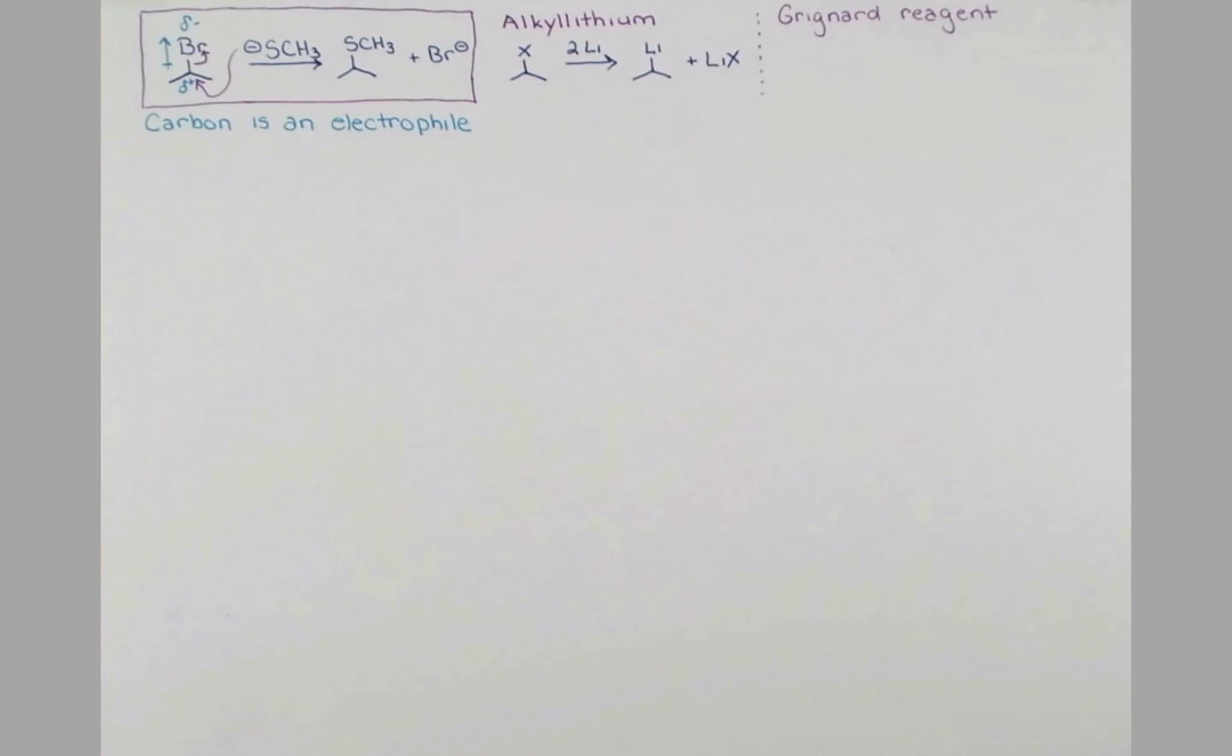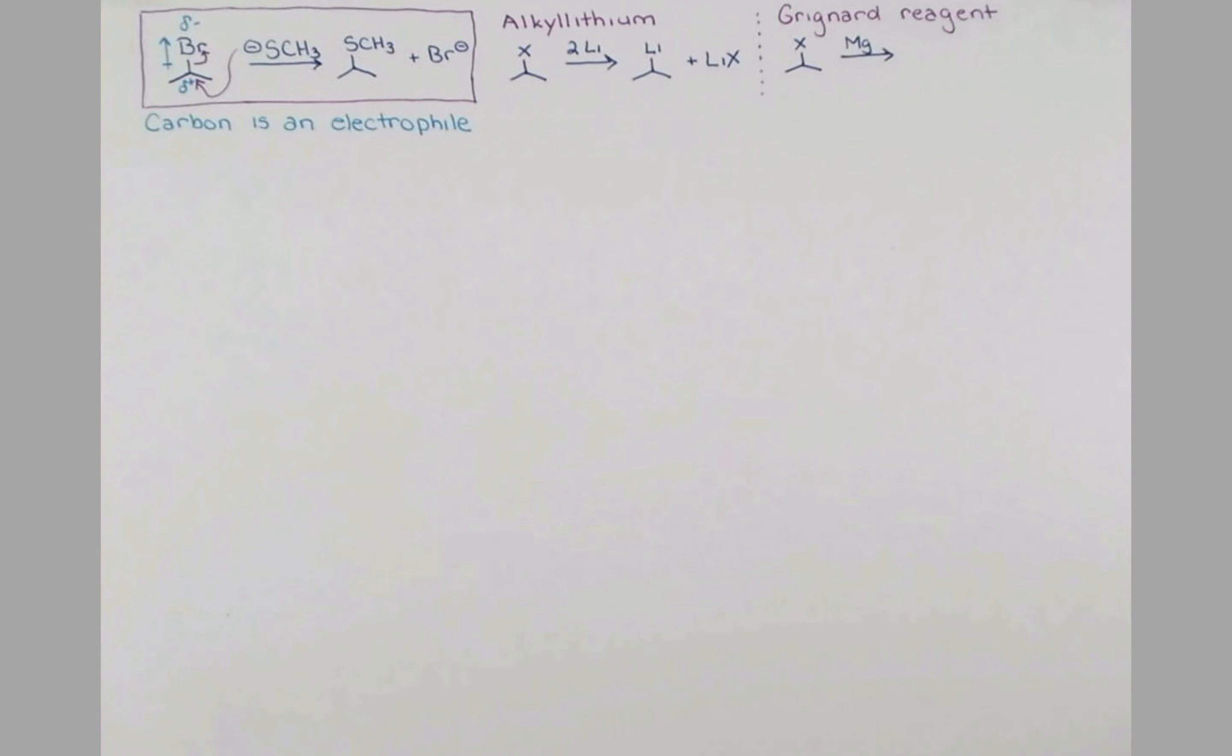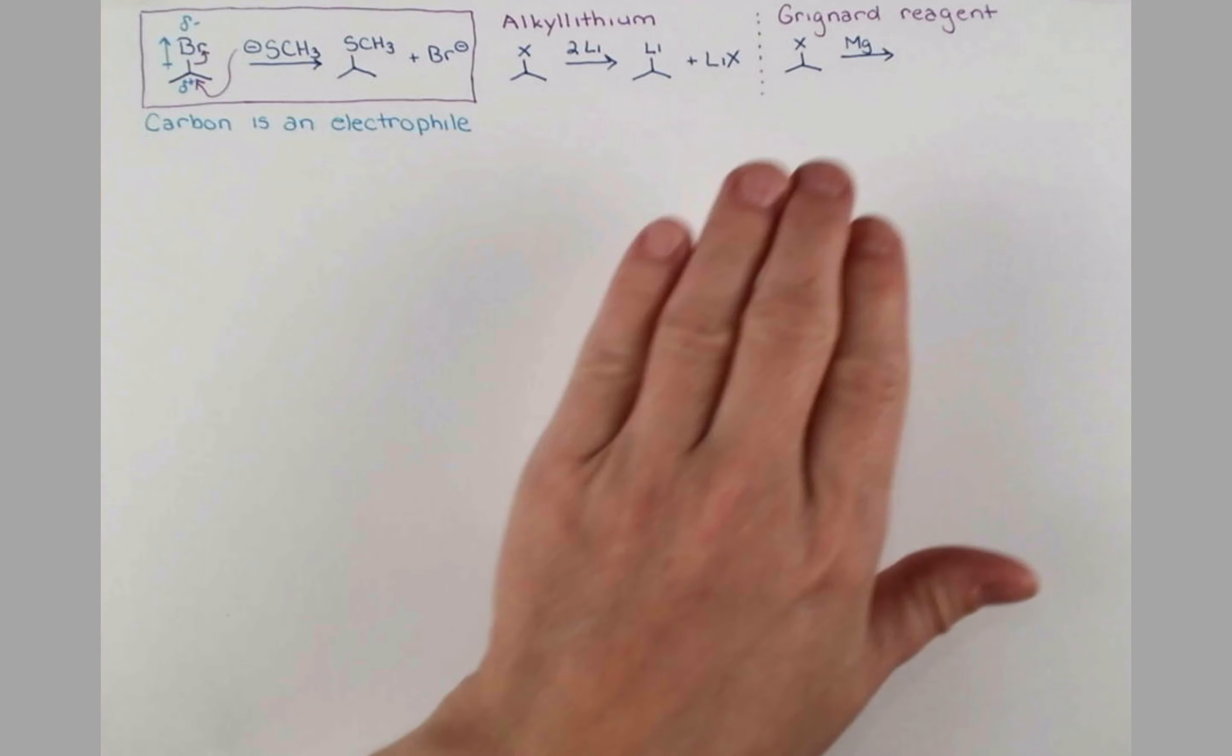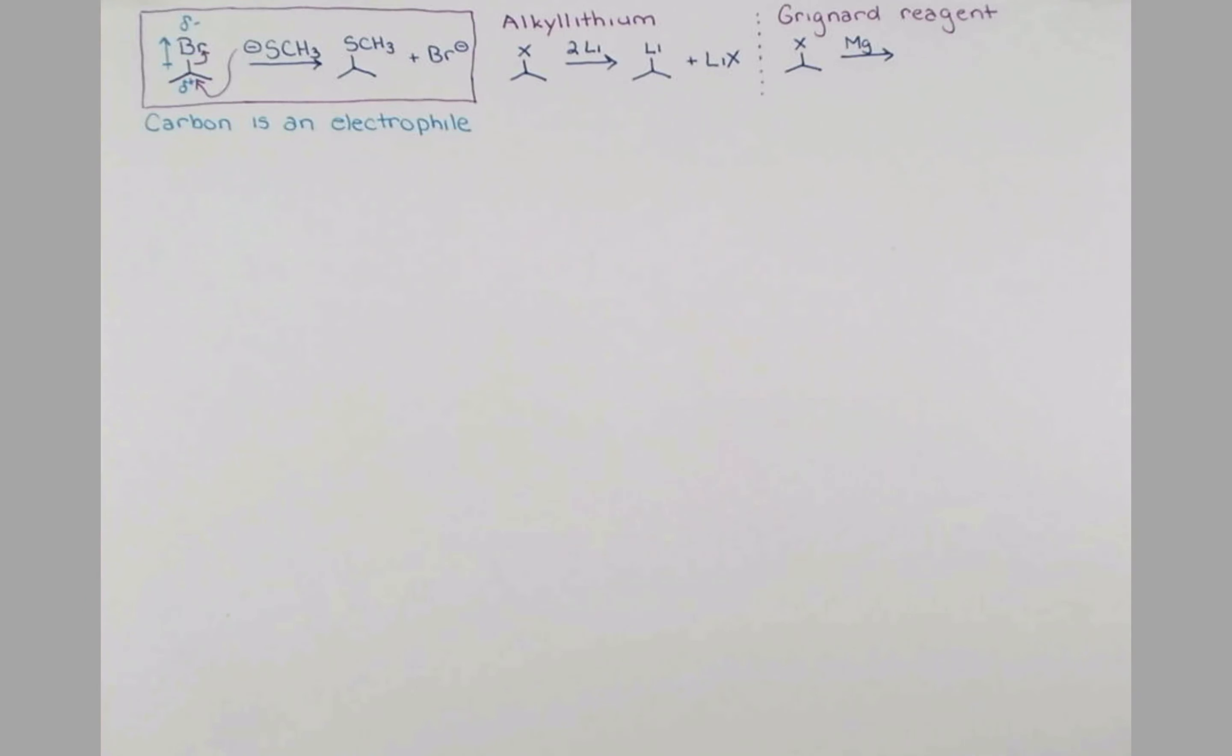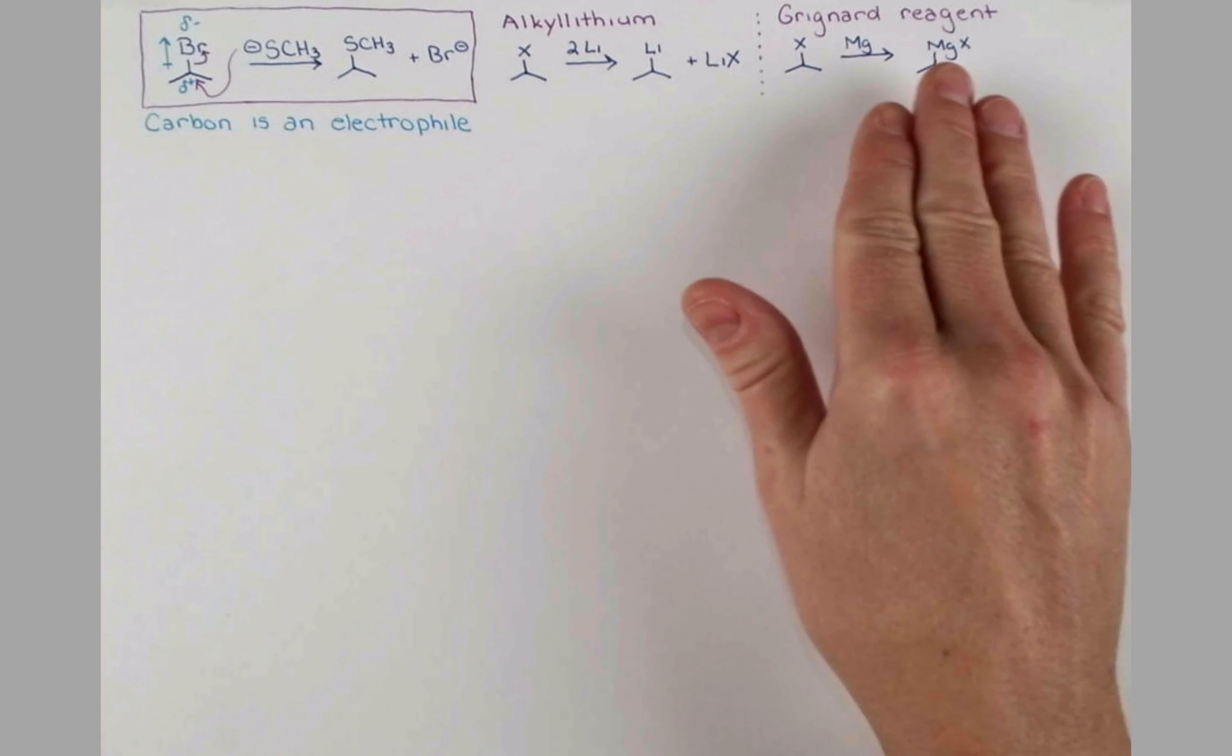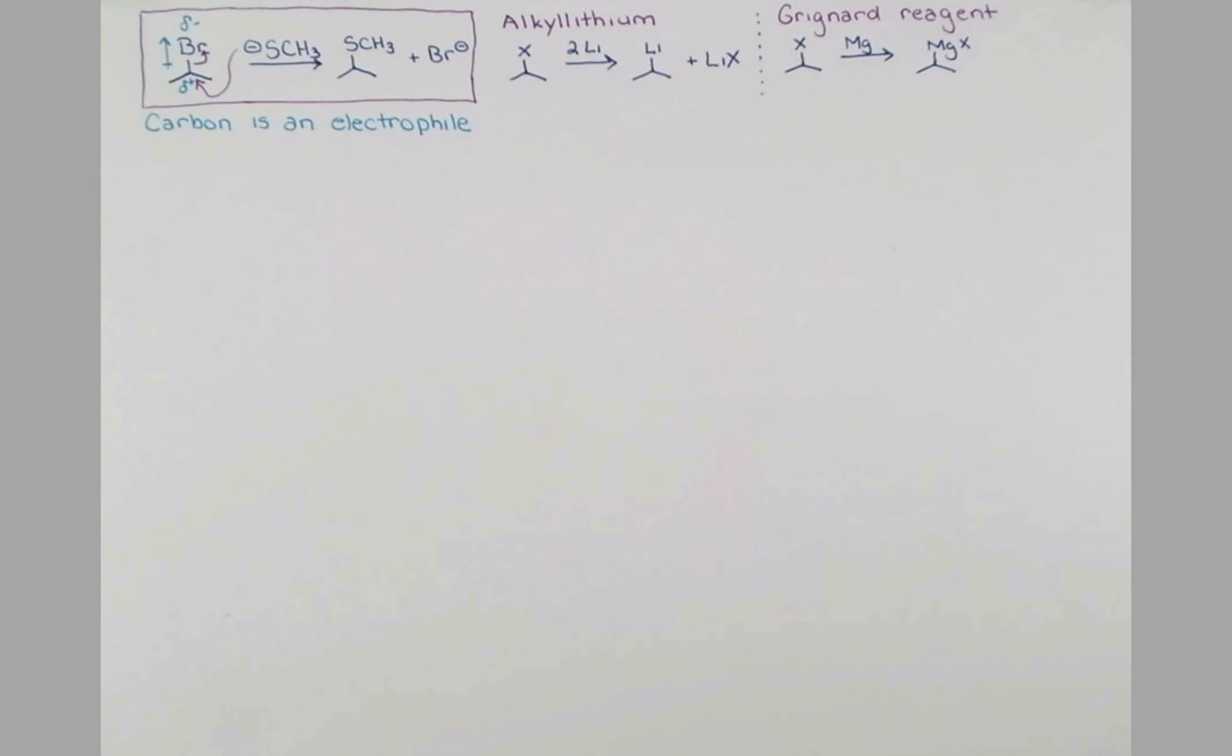Grignard reagents are generated similarly. The alkyl halide is this time treated with magnesium metal, and this forms the Grignard reagent, essentially where this magnesium metal is going to jump in between the carbon and the halide here, forming a new bond. Now these alkyl lithium and Grignard reagents have covalent character in this carbon-metal bond. However, there's significant ionic character as well. Let's start with magnesium. This is in group 2 on the periodic table. It tends to lose 2 electrons to form a 2+ cation.